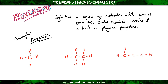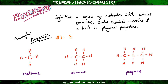We've got three molecules here — methane, ethane, and propane. Starting with the same general formula, that general formula is CnH2n+2. What that means is however many carbons you've got, you double it to find out the number of hydrogens and add 2.